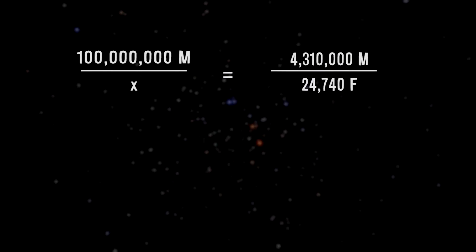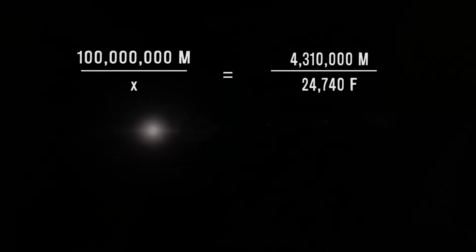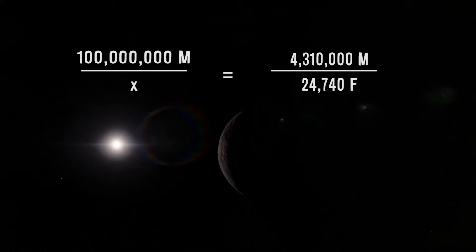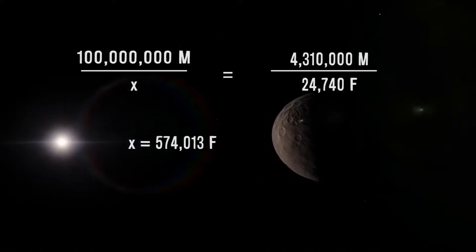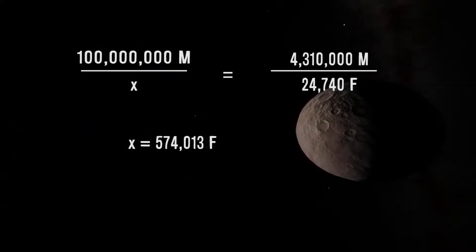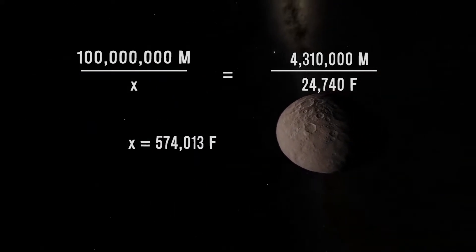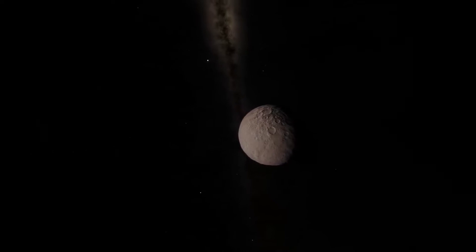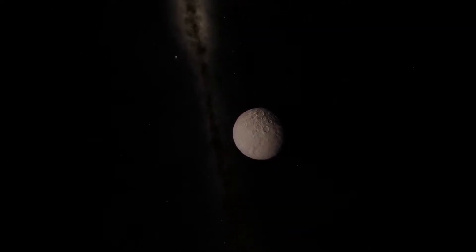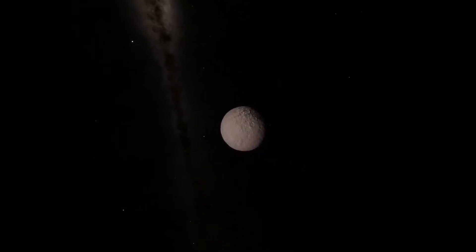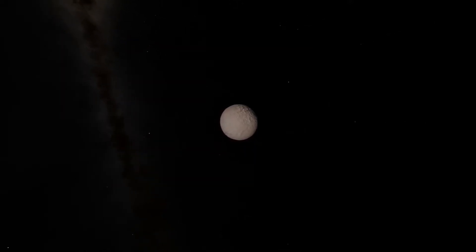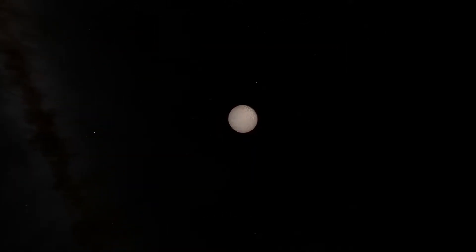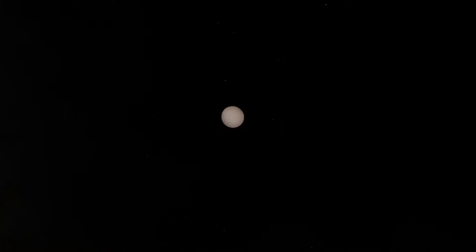By setting them up as fractions, we can cross multiply and figure out the temperature. By solving, we can determine that Gargantua's temperature at the event horizon is around 574,013 degrees Fahrenheit. Not only should Cooper suffer from the effects of spaghettification by crossing the event horizon, but he would also be subjected to an incredible amount of heat that would result in him being turned into ash.